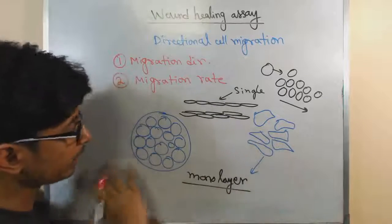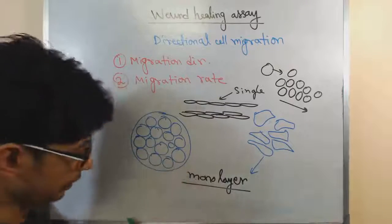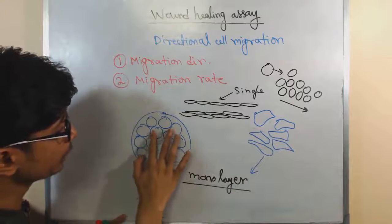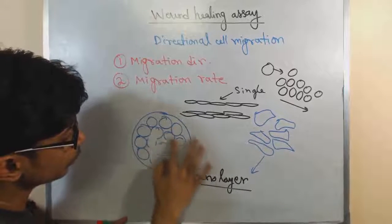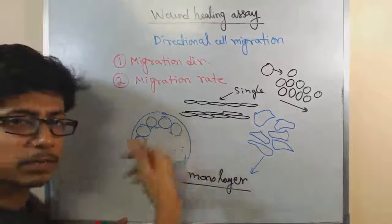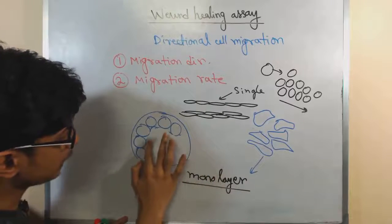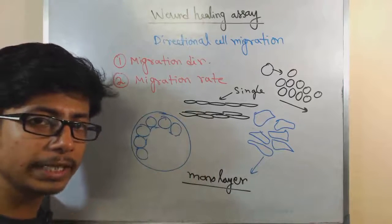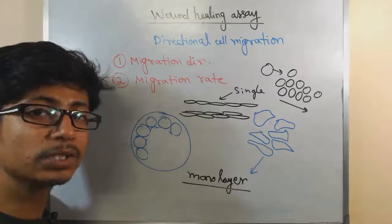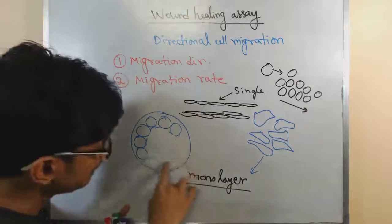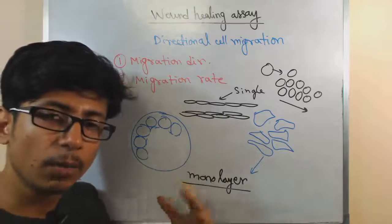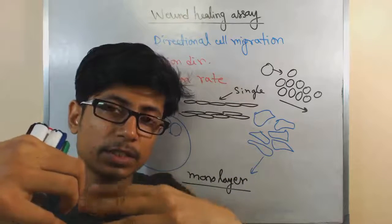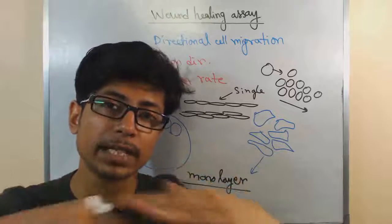We have this monolayer of cells in the cell culture media — solid or liquid, whatever according to our preference — and then what we do is we create a wound there. We just scrape off some cells from the surface, and that creates what we call a wound. Once this wound is created, we want to study the migration of the new cells. The old cells will start to divide and fill this surface, because once the whole surface is blocked, cell division is halted. But if there is any wound, cell division slowly starts to rise and cells begin to fill that surface area.